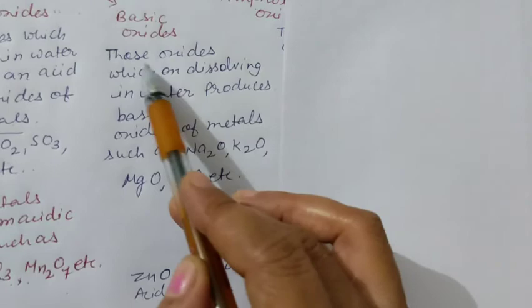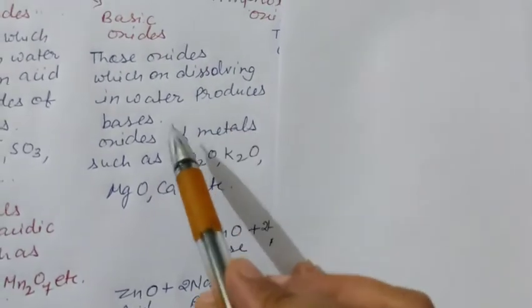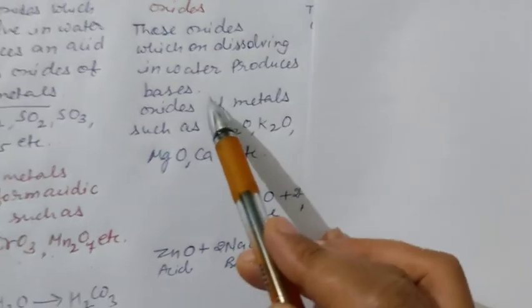Basic oxides: those oxides which on dissolving in water produce bases.